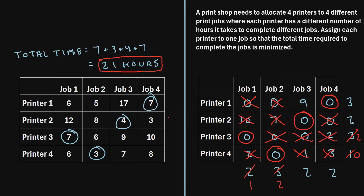One last thing to mention: there is more than one potential way to assign the printers to jobs and still end up with 21 hours. For example, assigning printer two to job four, printer three to job three, printer four to job two, and printer one to job one also totals 21 hours — the same minimum, just a different assignment. This happened because when choosing assignments, some rows and columns had two zeros, so we chose arbitrarily. The Hungarian method guarantees the minimum cost or time, but sometimes there is more than one solution that leads to the same minimum value.